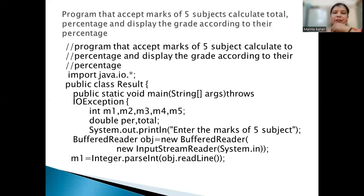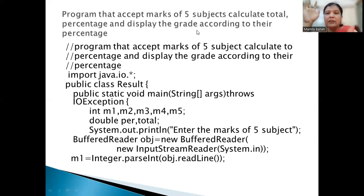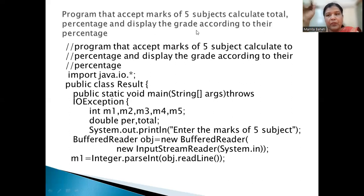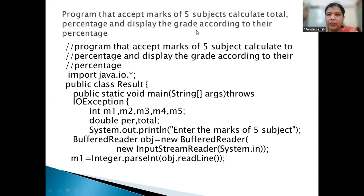Now we will workout the program. Before going for the program, remember the five finger principle: class name, object, equals to, new, constructor. Wherever I create an object, what is expected is: class name, object equals to new constructor. I have created a public class 'Result' with a void main.